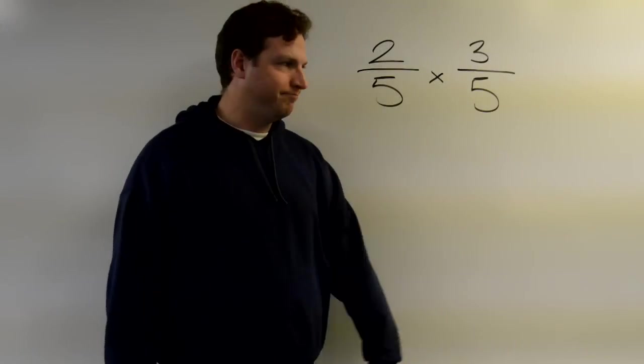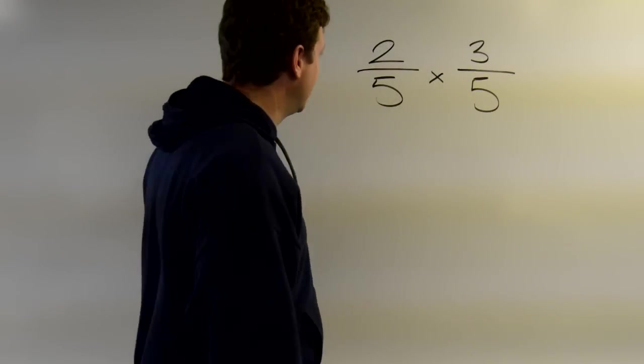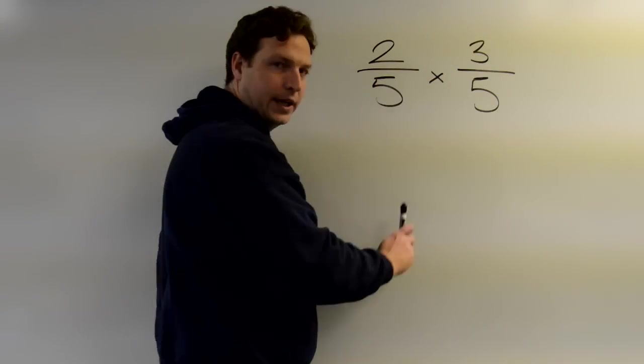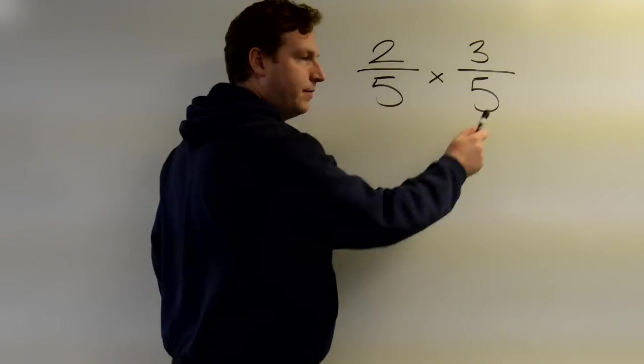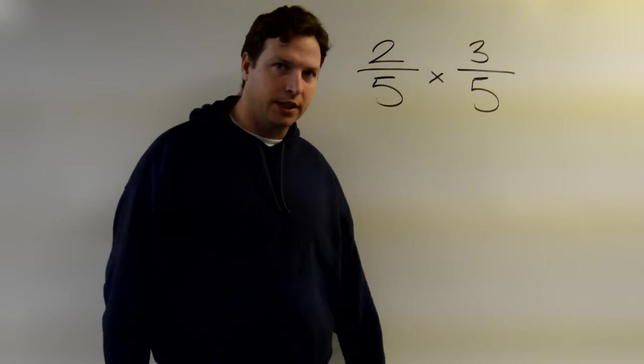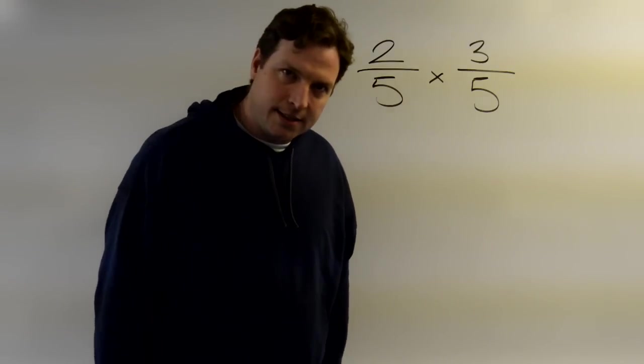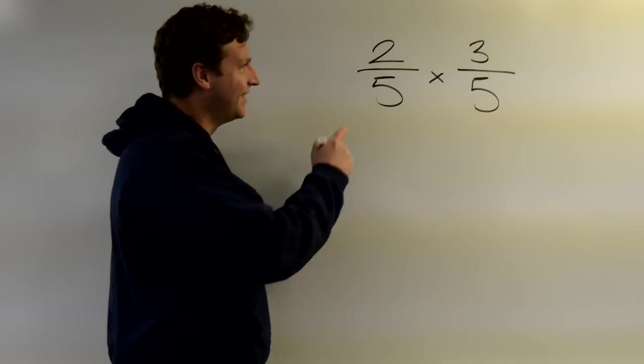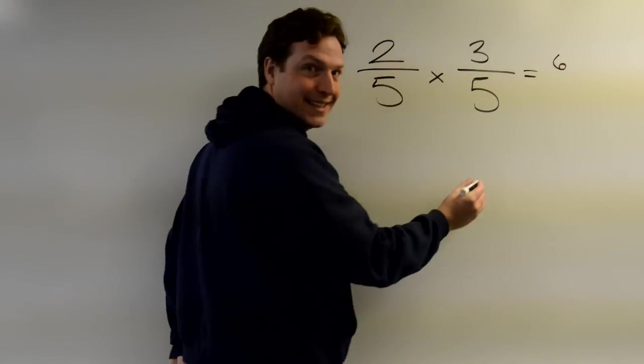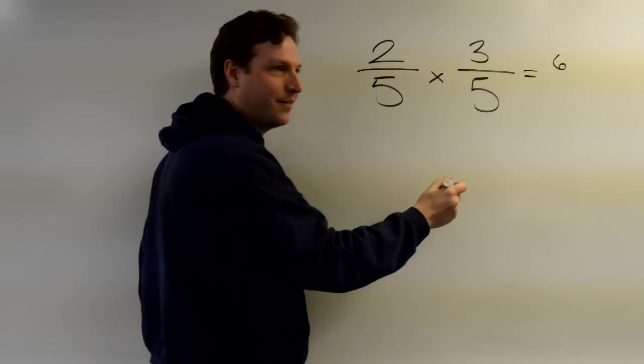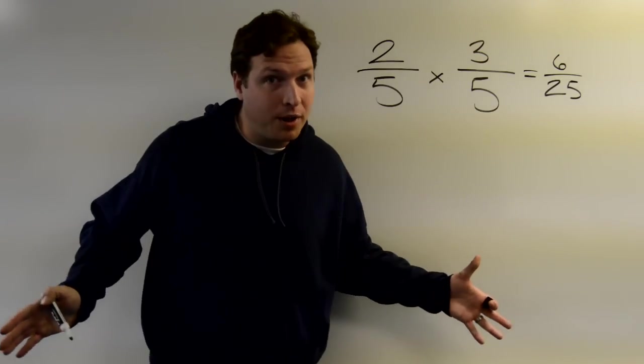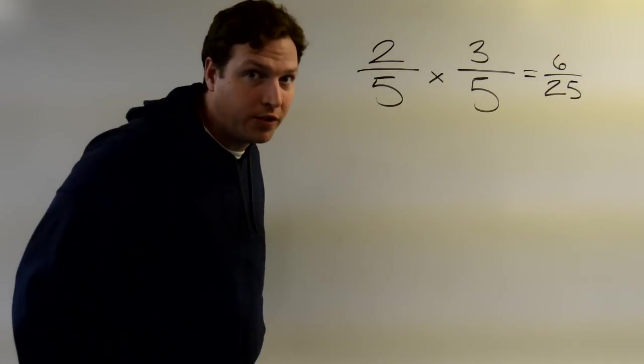Multiplying fractions, no problem. You just do it straight across. Two multiplication problems: two times three and five times five, and you get a resulting fraction. Two times three is six and five times five is twenty-five. It's that simple. Multiplying is the easiest thing to do with fractions.